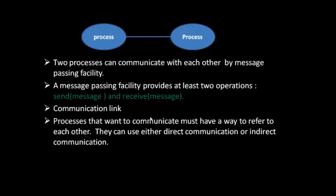Processes that want to communicate with each other must have a way to refer to each other. They can use either direct communication or indirect communication. In this tutorial we will study only about direct communication, and in the next tutorial we will study about indirect communication.